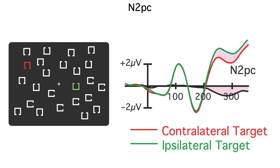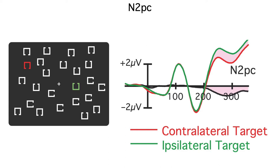In N2PC experiments, we divide up the data according to whether the target is on the left or the right side of the display, and we see a more negative voltage over the hemisphere contralateral to the target.